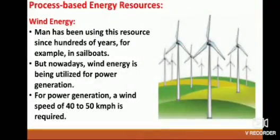Wind energy: Man has been using this resource since hundreds of years, for example in sailboats. But nowadays, wind energy is being utilized for power generation. A wind speed of 40 to 50 km per hour is required. Due to this wind speed, the blades of the windmills turn, generating kinetic energy, which is further converted into electricity. In the states of Maharashtra, Karnataka, Tamil Nadu, etc., windmills have been erected at many places.